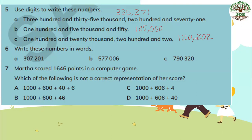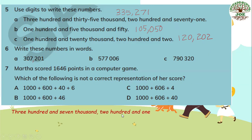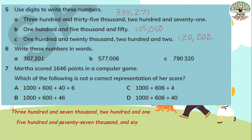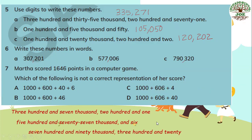Number six: write these numbers in words. Let's read them first. Part A: three hundred and seven thousand, two hundred and one. Part B: five hundred and seventy-seven thousand and six. Part C: seven hundred and ninety thousand, three hundred and twenty.